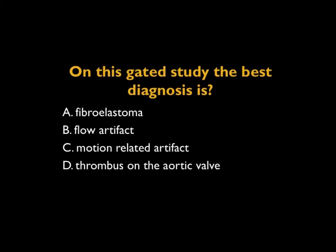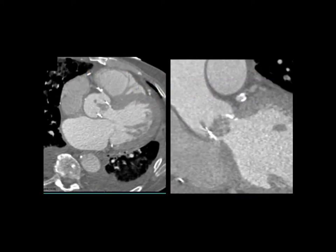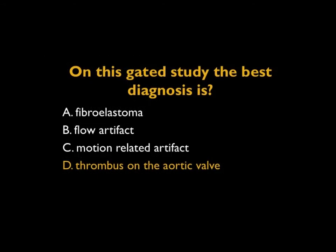This patient was evaluated for chest pain. You see the patient has had aortic valve replacement surgery, and there's a low-density lesion — not a flow artifact, not a motion-related artifact — that's a filling defect on the prosthetic aortic valve. If it were on the original aortic valve, you might think about a fibroelastoma, but in this patient with aortic valve replacement surgery, this is a thrombus on the aortic valve. A very nice example and diagnosis.